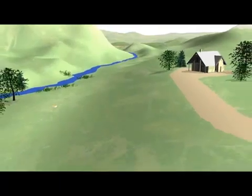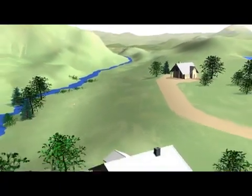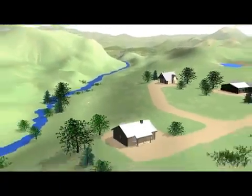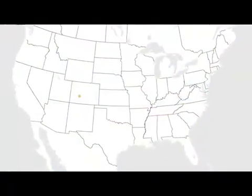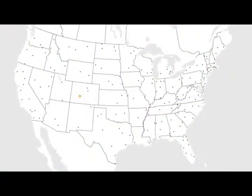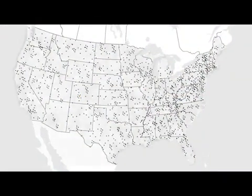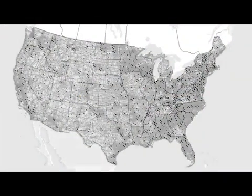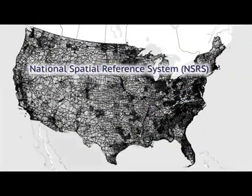When adjoining properties share these common starting points, it's easier to align them properly on a map. And when we all use a network of these marks spanning the continent, we share one national spatial reference system.